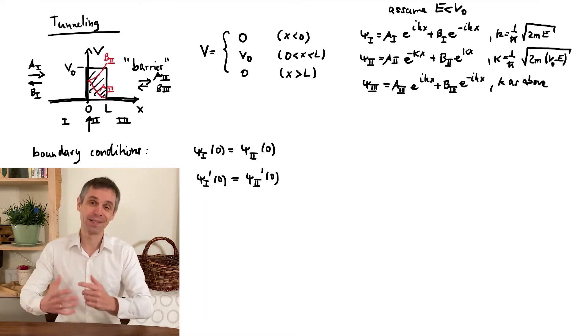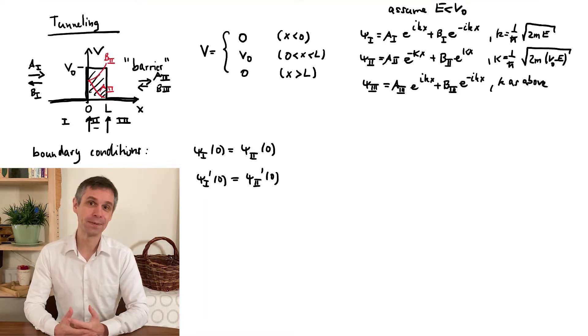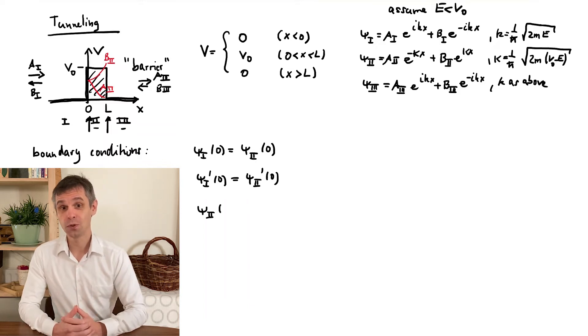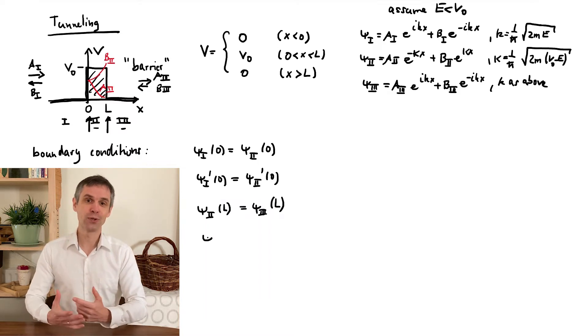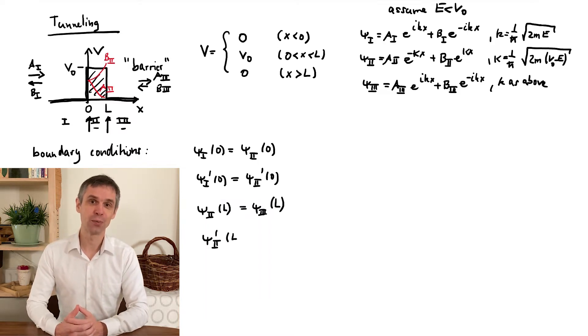And now we also encounter another interface between regions 2 and 3. There the conditions look a bit more involved, but this is simply because the way we place the barrier, so that now we have to evaluate the exponential function away from the origin.